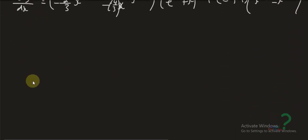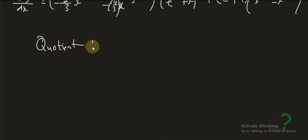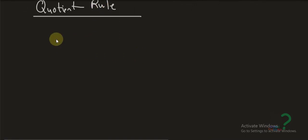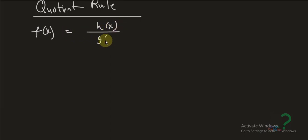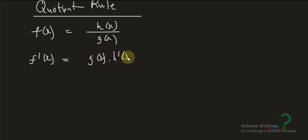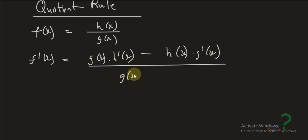Now let's look at the quotient rule. The quotient rule says: if f(x) equals h(x) over g(x), then f prime of x equals g(x) times h prime of x minus h(x) times g prime of x, all over g(x) squared.